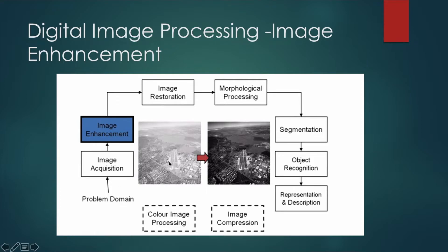The next step is image enhancement. For example, a satellite image may have very low contrast, with brightness values that are off. We need to set the contrast to an optimal level to clearly detect objects. There are various image enhancement techniques to adjust contrast or pixel intensity values to make the image brighter or give the intensity colors a sharper appearance.